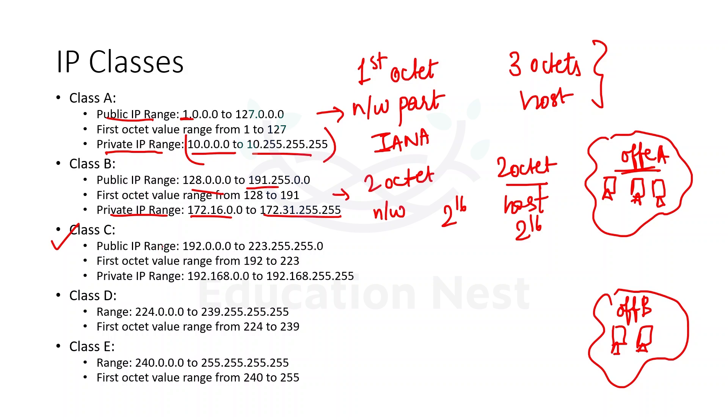Then we have class C. So into class C, we have this public range. Here we have three octets representing the network part and only one octet. So here the number of hosts that we can have is less. We can just have two to the power of eight hosts over here inside of the network. But here we can create multiple networks. The private IP range address is being shown over here.